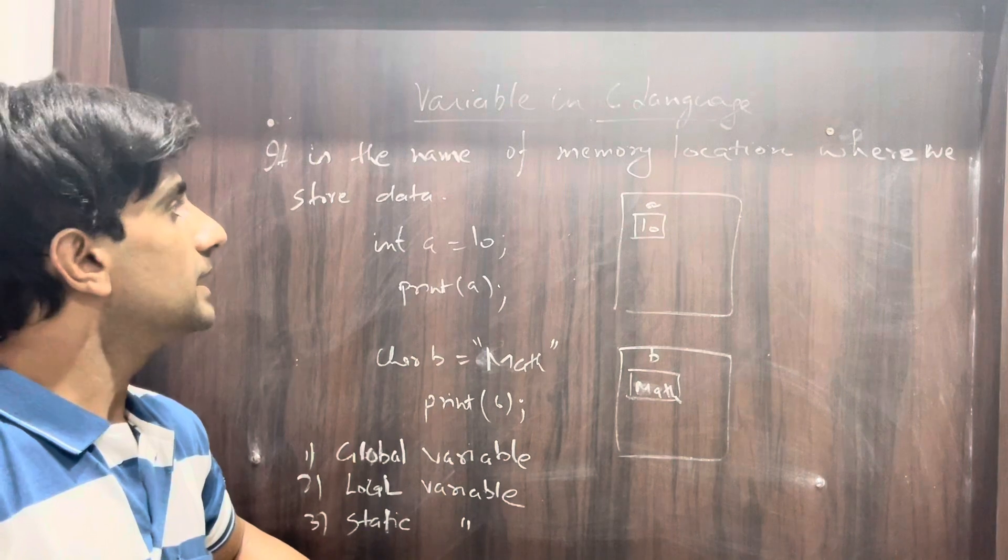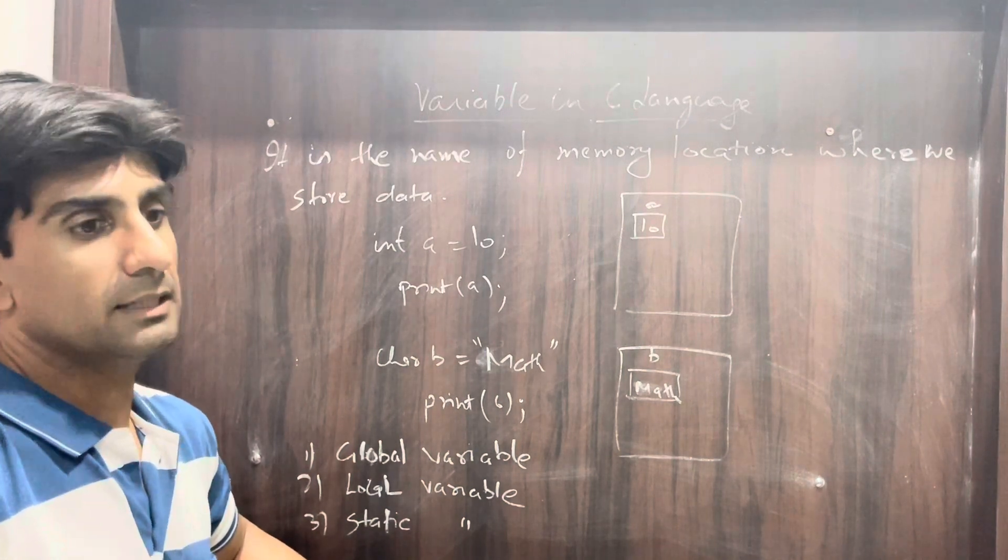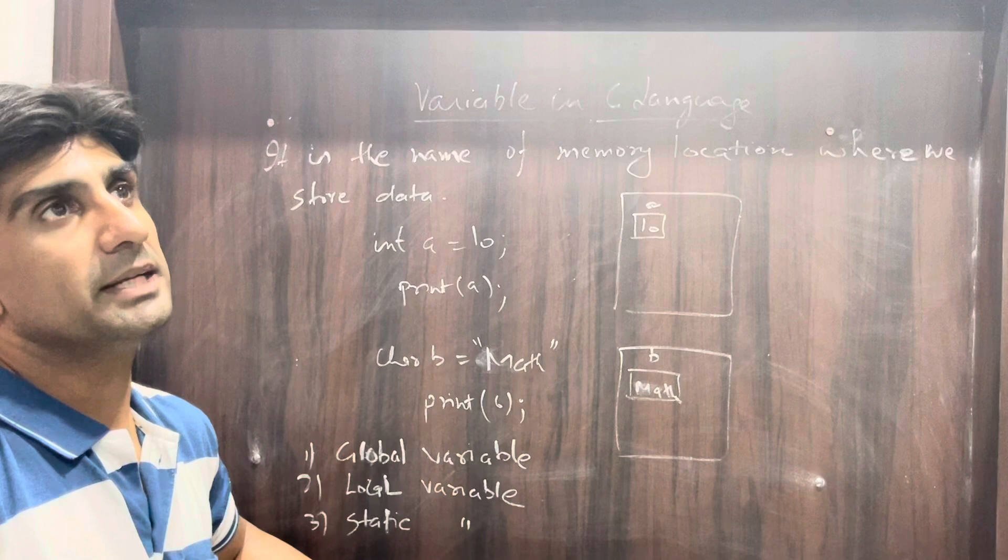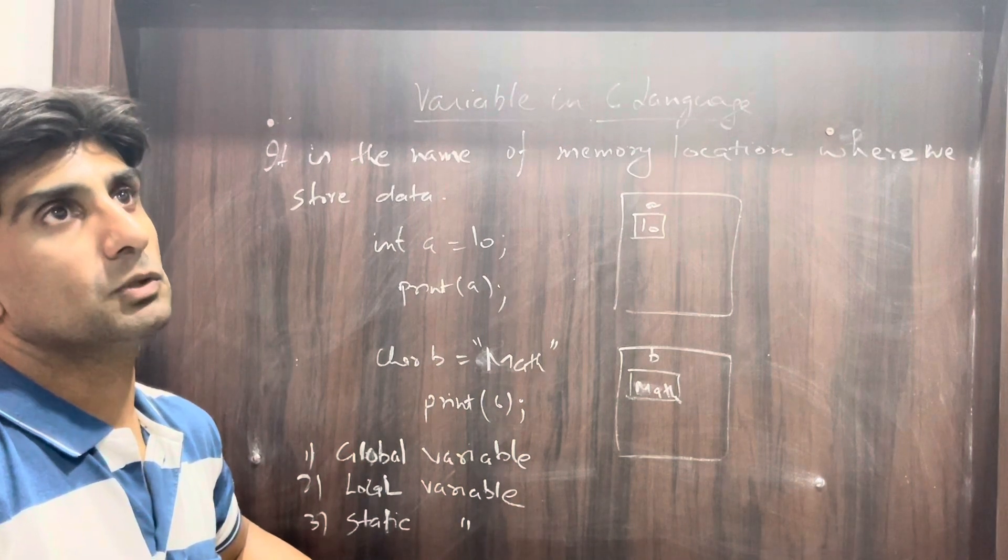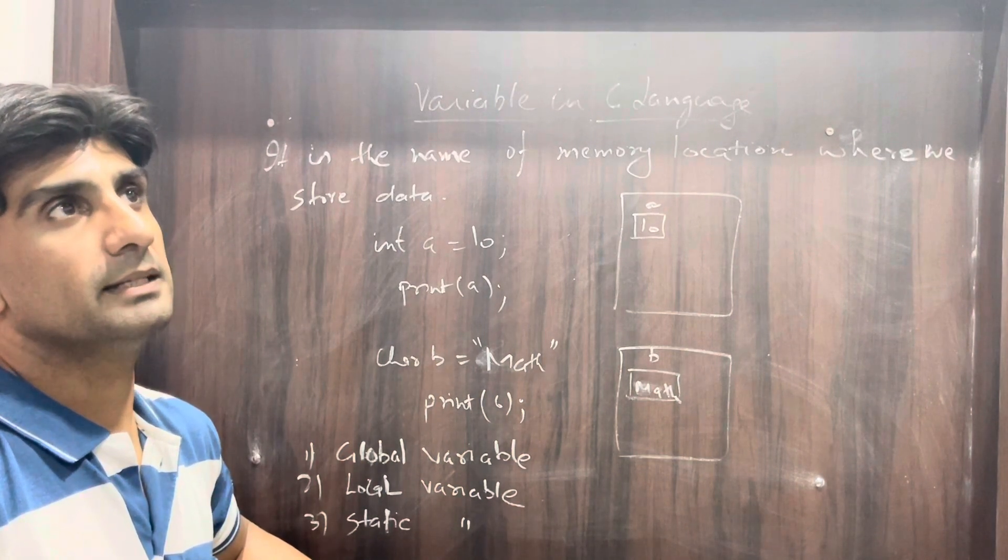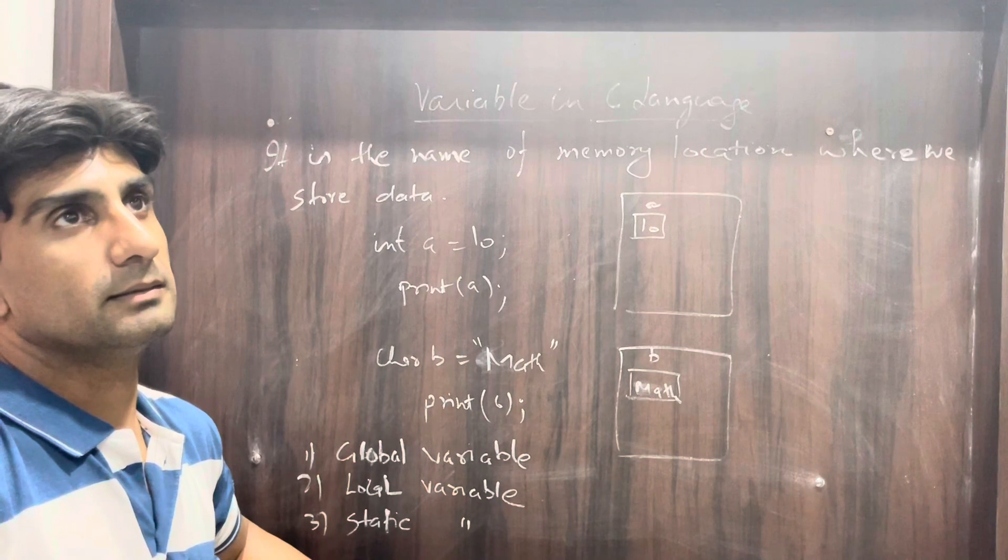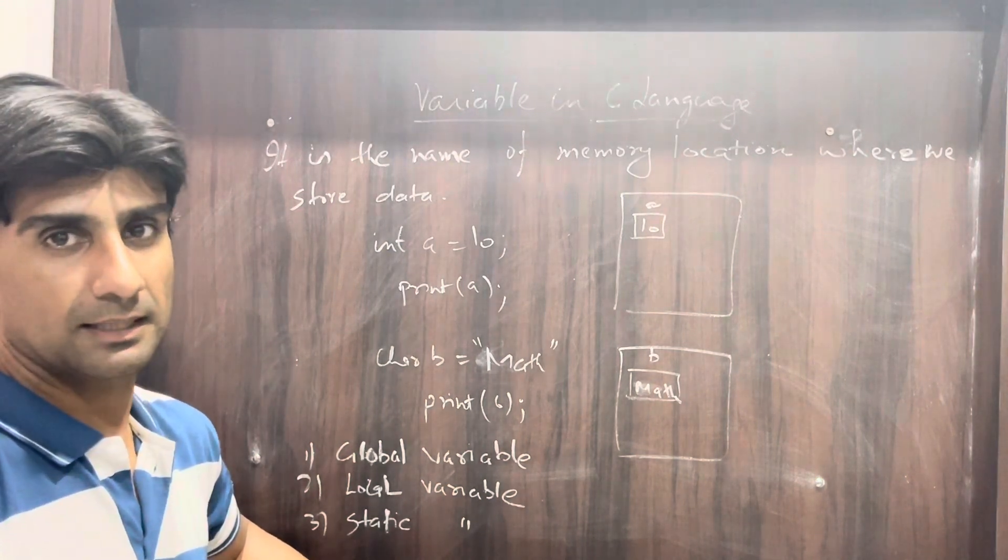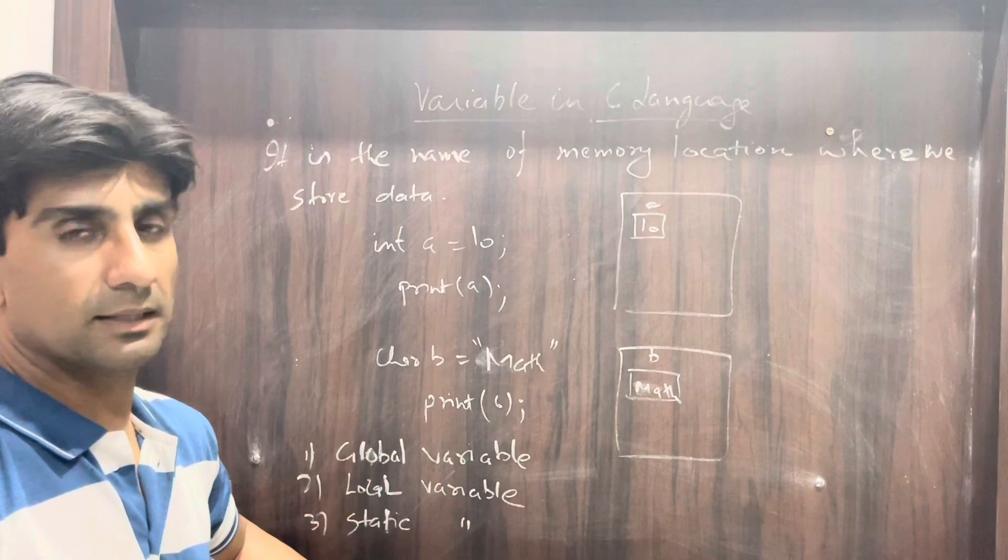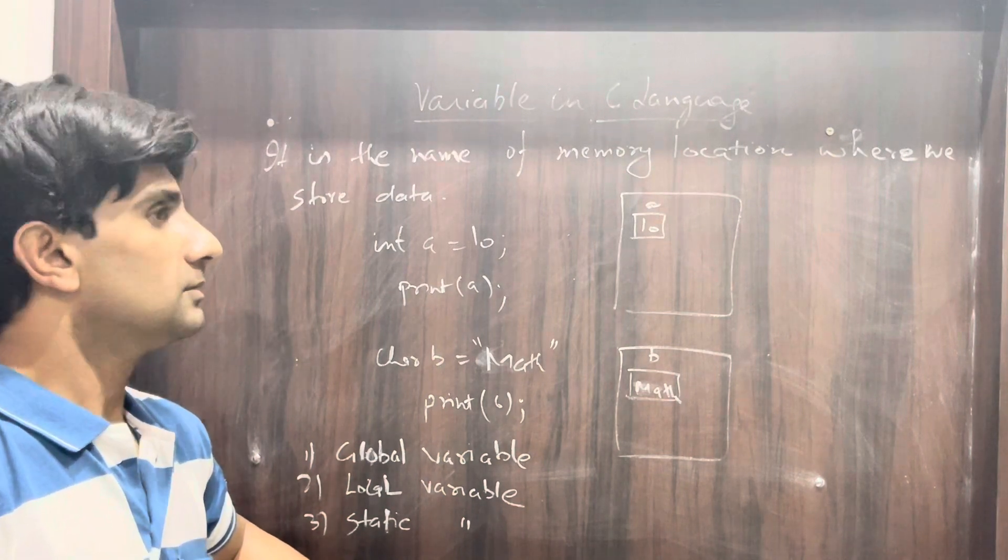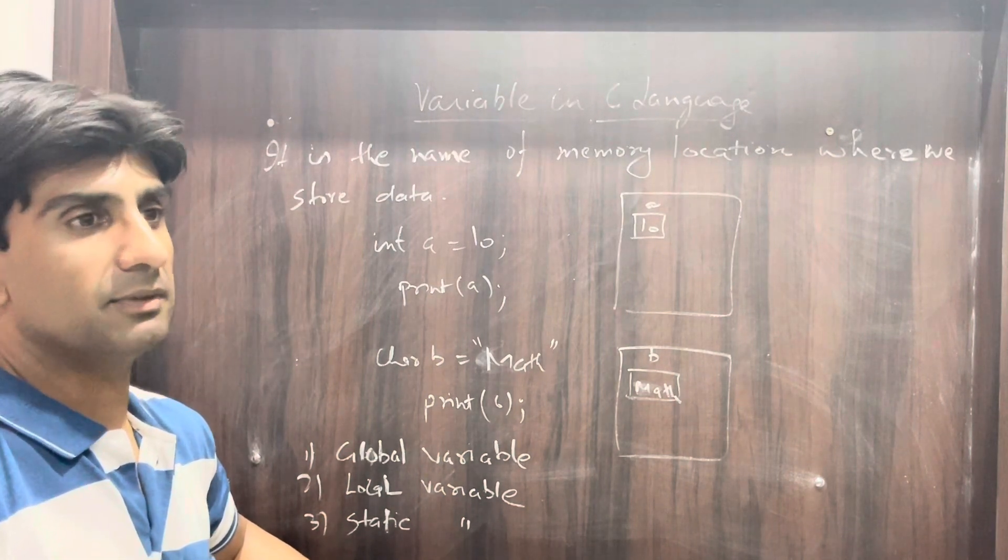A variable is a name of a memory location where we store data. We use a variable to assign a name to the data that we use in our program. Every input we give in the program goes to some memory.